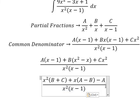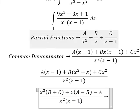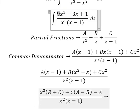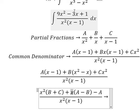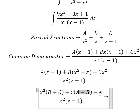Next we need to compare coefficients. We have number 9, so B plus C equals number 9. About x, we have negative number 3, so negative 3 equals A minus B. About the numbers, negative A equals positive number 1. And now, we create the system of equations.